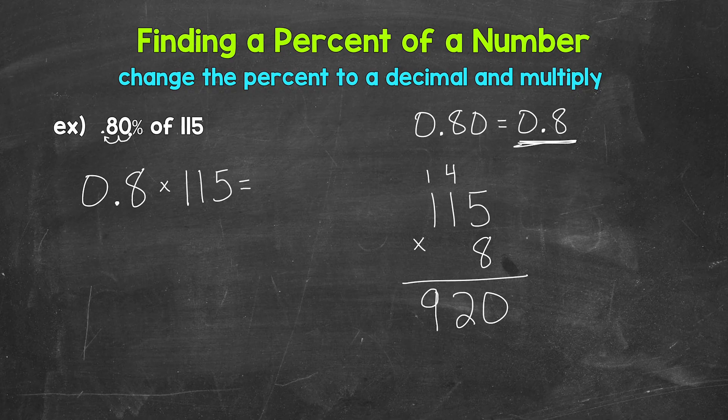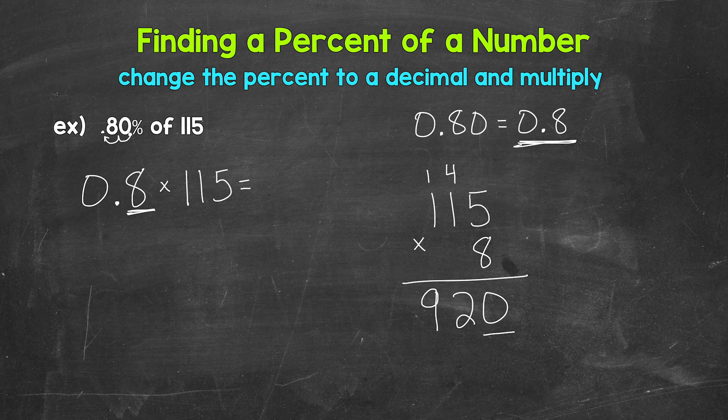Now we need to place the decimal. So we count how many digits are to the right of a decimal. We have one. That means our answer will have one digit to the right of the decimal. So one digit, the decimal goes right here in between the two and the zero.